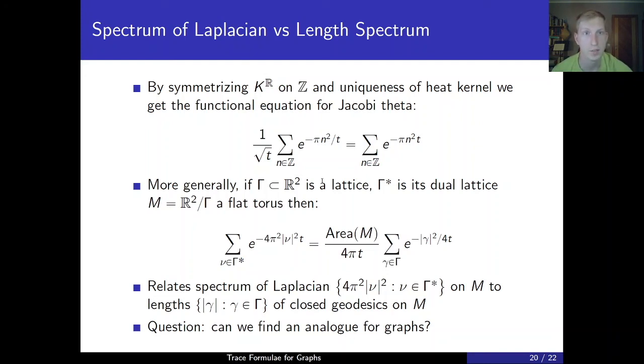But more generally, if we have a lattice gamma on the plane, where gamma is an additive subgroup generated by two linearly independent vectors, and gamma squared is its dual lattice, and m, which is the quotient of the plane by this lattice, then we have the following identity, which can be proven analogously as above. This is a trace formula, because on the left-hand side, we have terms containing the spectrum of the Laplacian, these values, 4 pi squared, the magnitude of nu squared, with the length of closed geodesics on m, which are these values, the magnitude of gamma. Now the question is, can we find an analog for graphs?